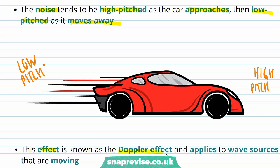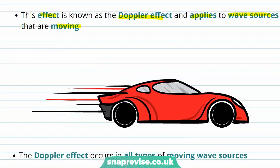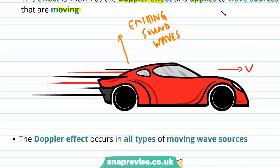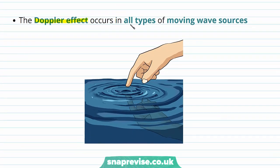This effect is known as the Doppler effect and it applies to wave sources that are moving. So this car is emitting sound waves while it's moving at a velocity V. The Doppler effect occurs in all types of moving wave sources — in the example of the race car we focused on sound waves, but it applies to any kind of moving wave source.